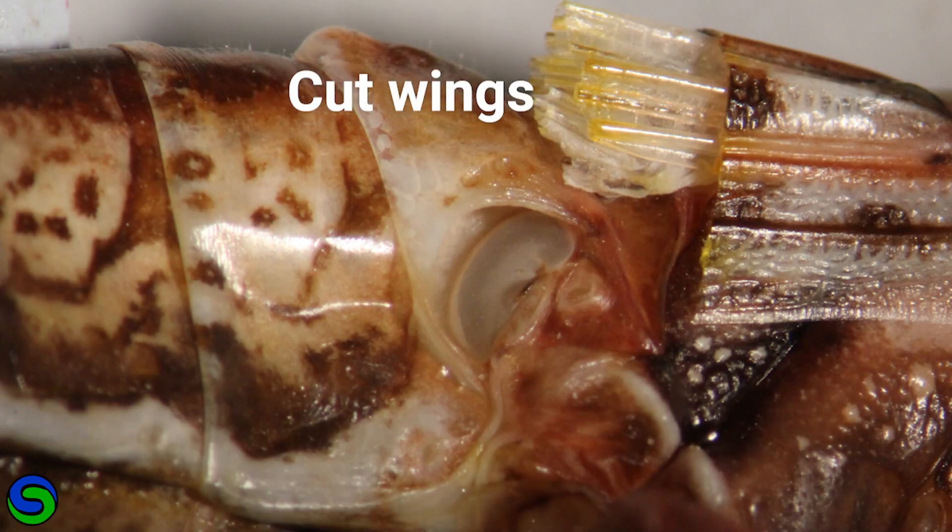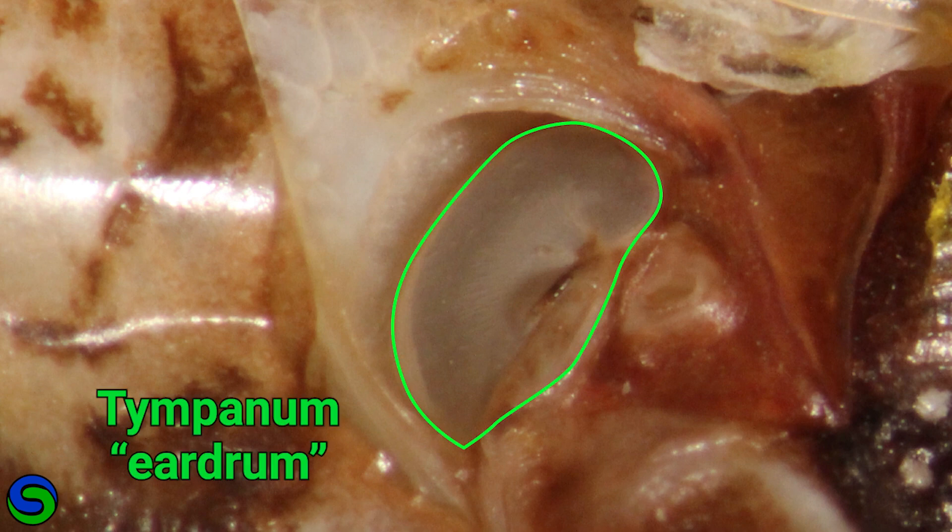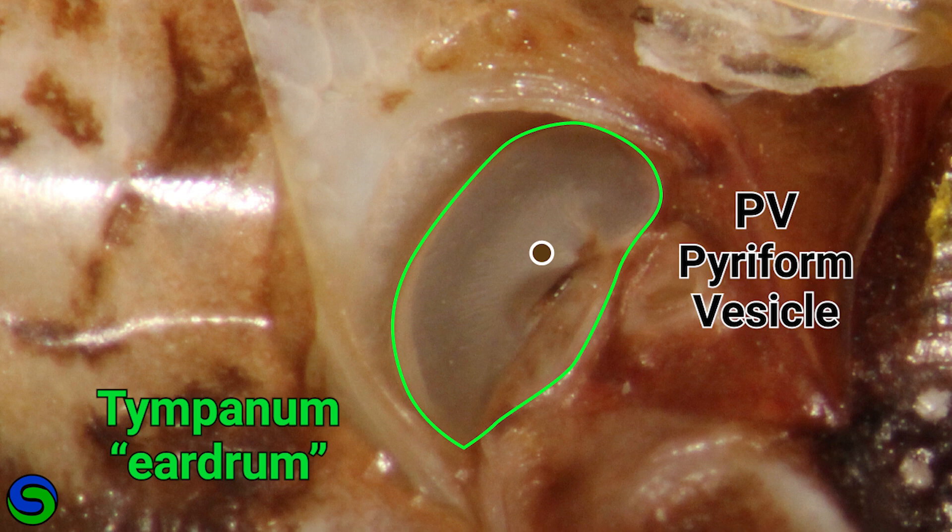The ear is seen here behind where the wings have been cut. Zooming in, the outline of the tympanum looks like an oval. This is in essence the eardrum. One key element is a brown dot called the PV or piriform vesicle.